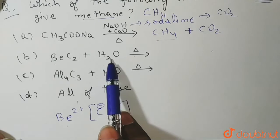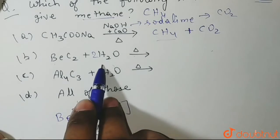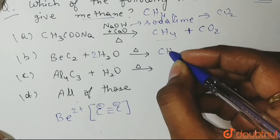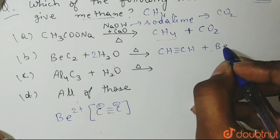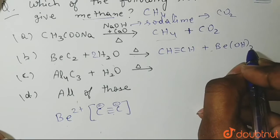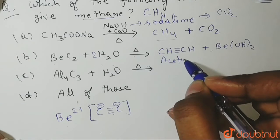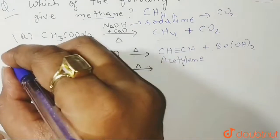When we treat beryllium carbide with water, we take two molecules of water. When we heat it, we will get CH triple bond CH plus beryllium hydroxide. This is acetylene forming. So here methane is not forming. Thus b will be the correct answer.